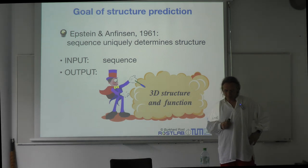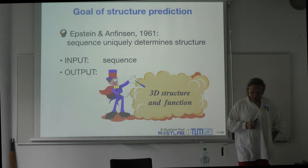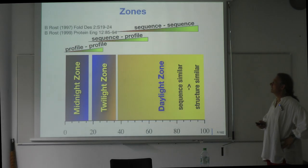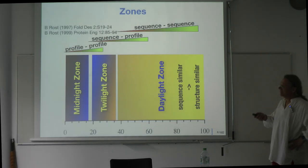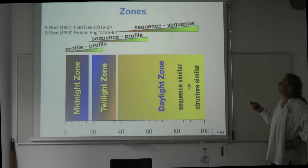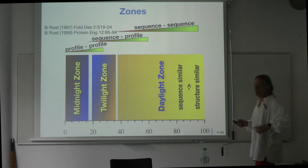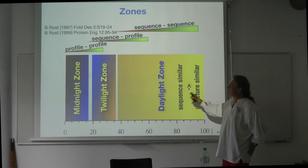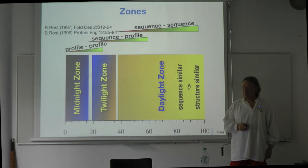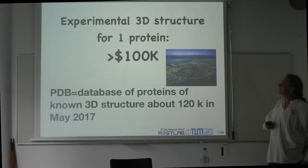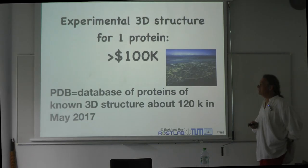In principle, we should be able to predict structure from sequence because proteins fold from sequence and they don't need anything else, but we cannot. We can do sequence comparisons, sequence profile comparison, profile-profile comparison, so we can see whether a pair of proteins in particular realms has similar structure, but we cannot quite predict it if we don't know. We can predict it through homology modeling, and with that we sort of cover half of the database.